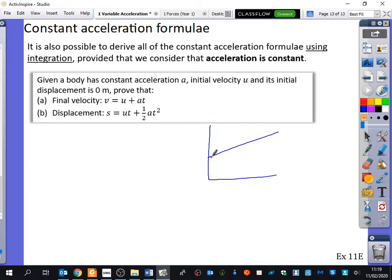Rather than it just being for a particular straight line graph, we can actually come up with this idea through integration and differentiation as well. So it's an alternative way of proving the SUVAT formulae for constant acceleration. I've said here it is also possible to derive all of the constant acceleration formulae using integration, provided that we consider that acceleration is constant. I have to consider that acceleration is constant because these constant acceleration formulae only apply when acceleration is constant, of course, from the title of it.